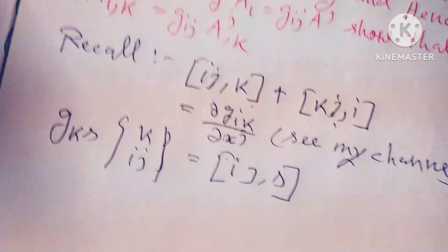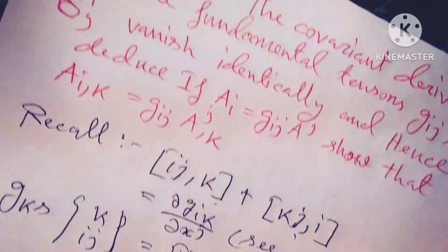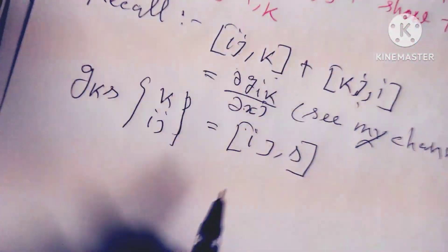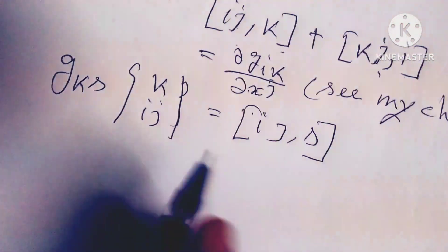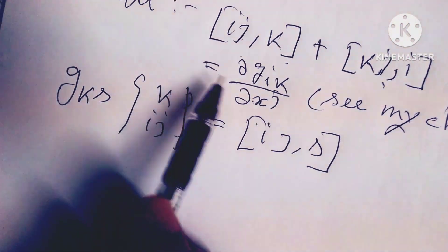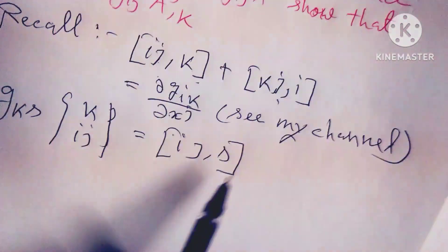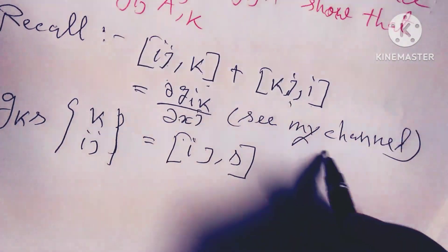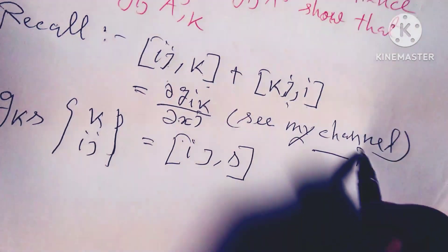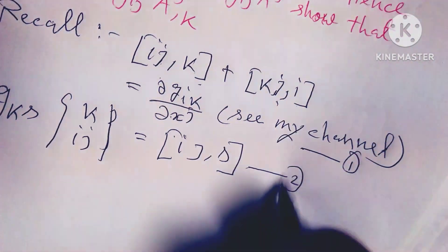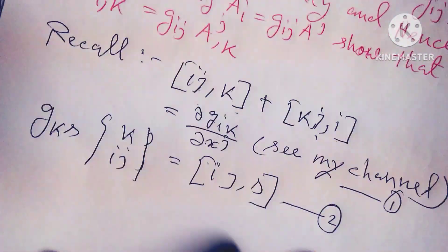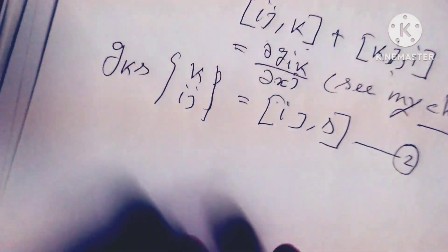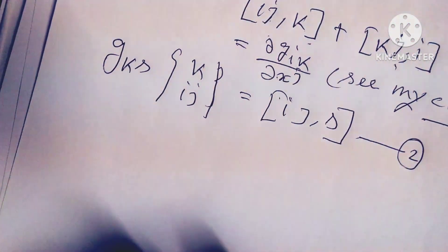I hope you will understand all the equations. This first identity is equation 1 and the second is equation 2. Please check my previous video to see how I evaluated these equations.